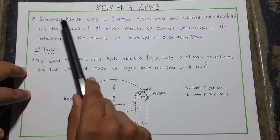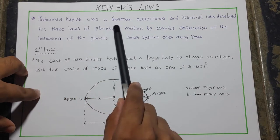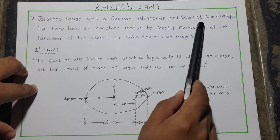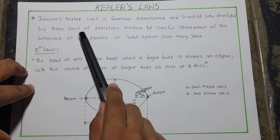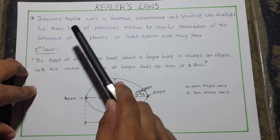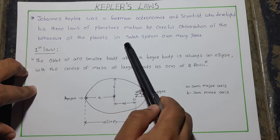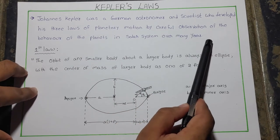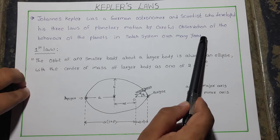There is a scientist called Johannes Kepler. He was a German astronomer and scientist who developed his three laws of planetary motion by careful observation of the behavior of the planets in the solar system over many years. Now let us see the major three laws of planetary motion developed by Kepler.